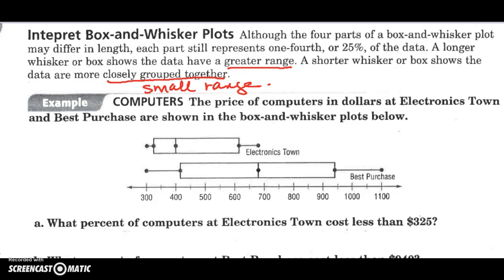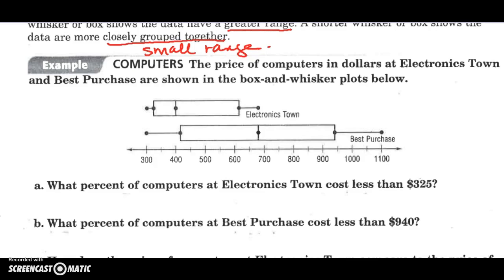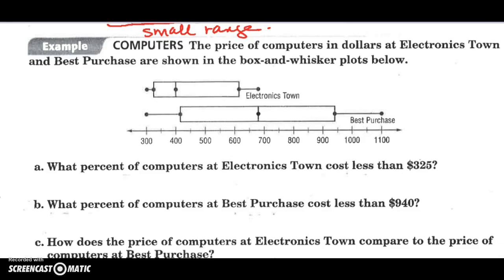So don't let the fact that it's spread out confuse you. So here are some computer purchasing information represented from Electronic Town and between them and Best Purchase. We're going to compare Electronic Town and Best Purchase and look at their pricing of their computers. So what percent of computers at Electronic Town costs less than $325? So let's locate three. There's $350. So $325 would be right here.